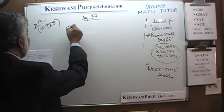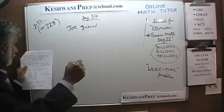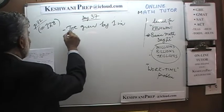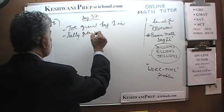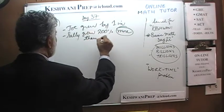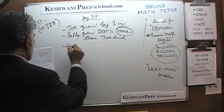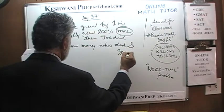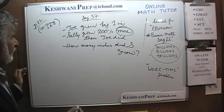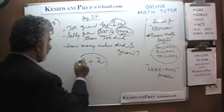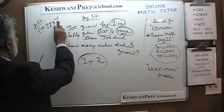Number 128 is a very straightforward problem. It says Joe grew in height by 1 inch in the last year, and Sally grew 200% more than Joe did. The question is: how many inches did Sally grow? 100% of 1 is 1, and 200% of 1 is 2, so she grew 1 plus 2 — she grew by 3 inches.